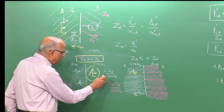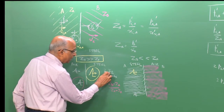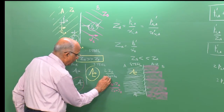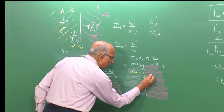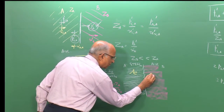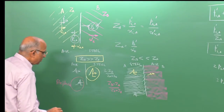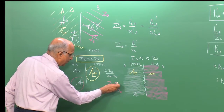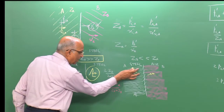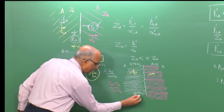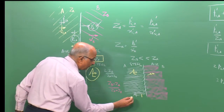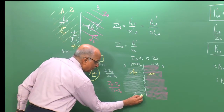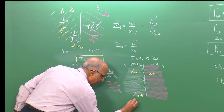Since Z_b is smaller than Z_a, what gets transmitted is a lower-amplitude wave. For the reflected wave, Z_b − Z_a is negative — meaning what goes as a compression gets reflected as an expansion. A compression arrives but reflects back as an expansion wave.